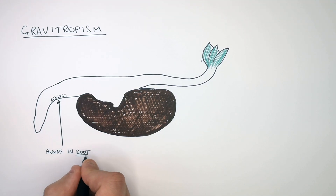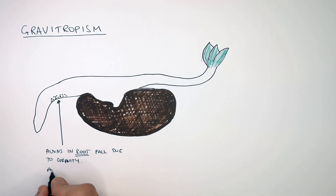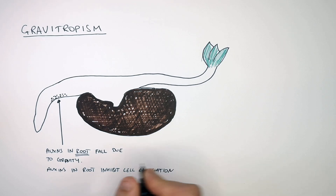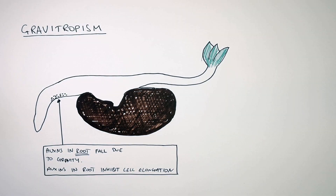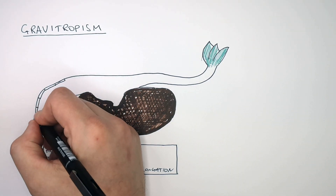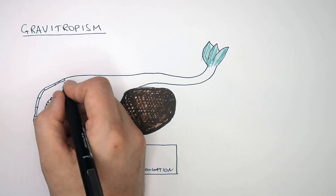The auxins fall to the bottom of the root due to gravity. Auxins in the root inhibit cell elongation — whereas auxins in the shoot stimulate cell elongation, auxins in the root do the opposite: they inhibit cell elongation. So where there are auxins, the cells are not going to elongate as quickly as where there are no auxins.